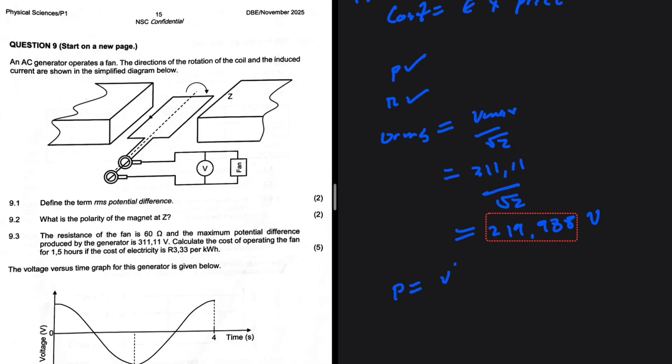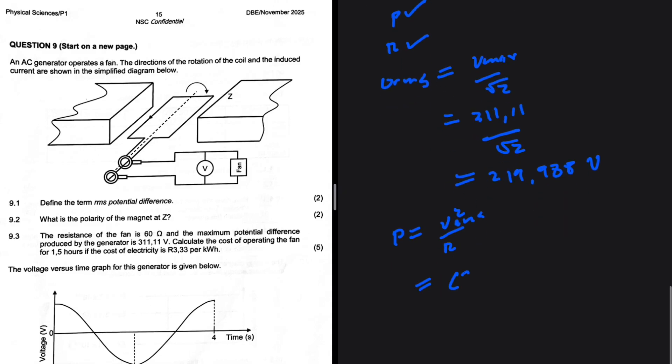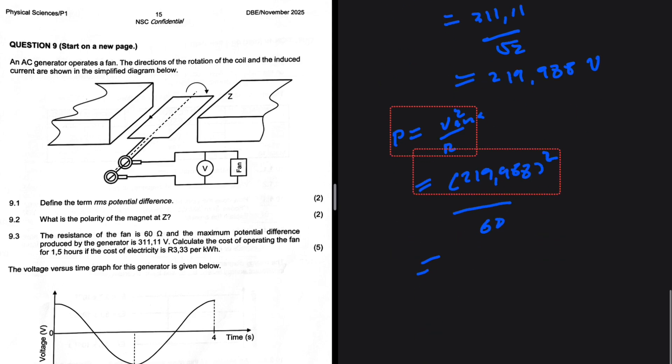Now with the V_rms and the resistance, let's find the power. Power is V squared divided by R. The power will be equal to 219.988 squared over the resistance, which is 60 ohms. I'm getting 806.5786 watts.